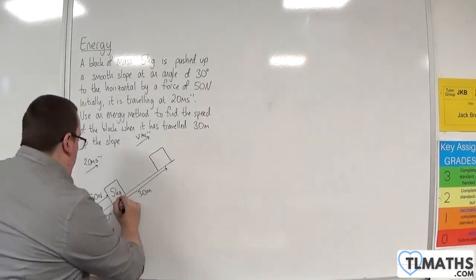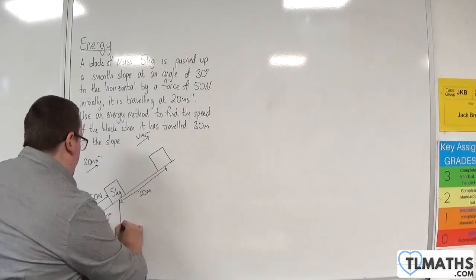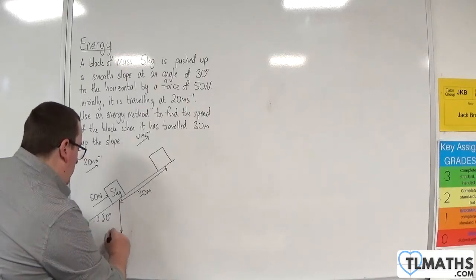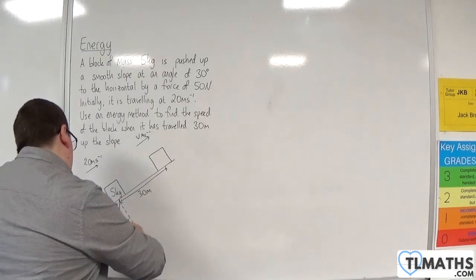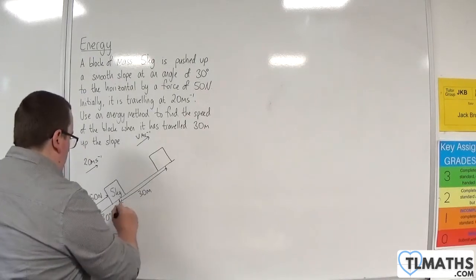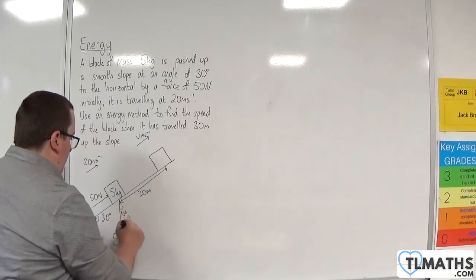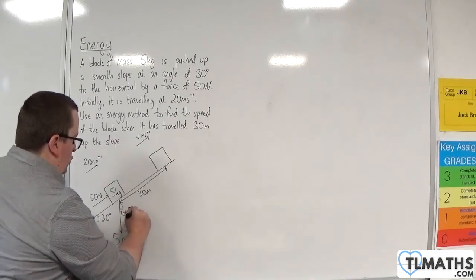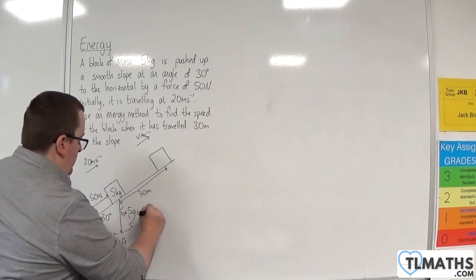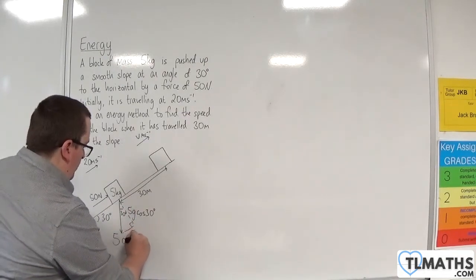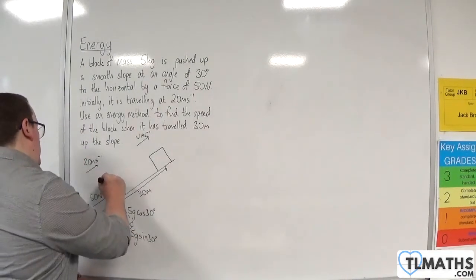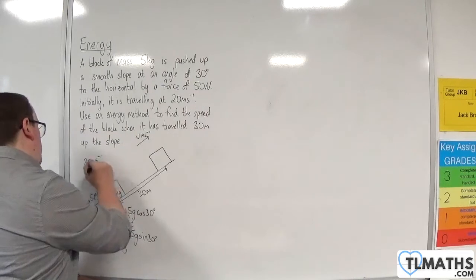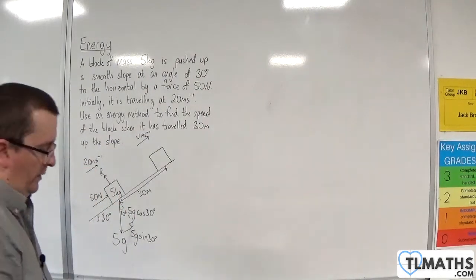The block's weight will work vertically downwards, and so that will be 5G. And if we complete our triangle, that will be 30 degrees, and this will be 5G cosine 30, and this will be 5G sine 30. So we'll have our normal reaction force.